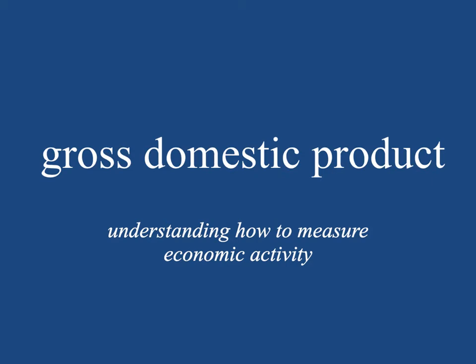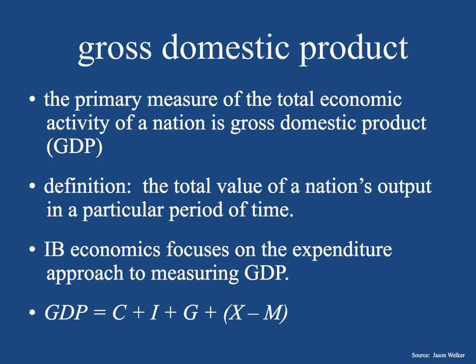Hey, everybody, hope you're doing well today. Let's take a look at gross domestic product and the understanding of how to measure economic activity in a particular nation. First of all, gross domestic product — GDP is the primary measure of the total economic activity in a nation. It's the total products made in a country. Gross means total. The definition: the total value of a nation's output in a particular period of time.